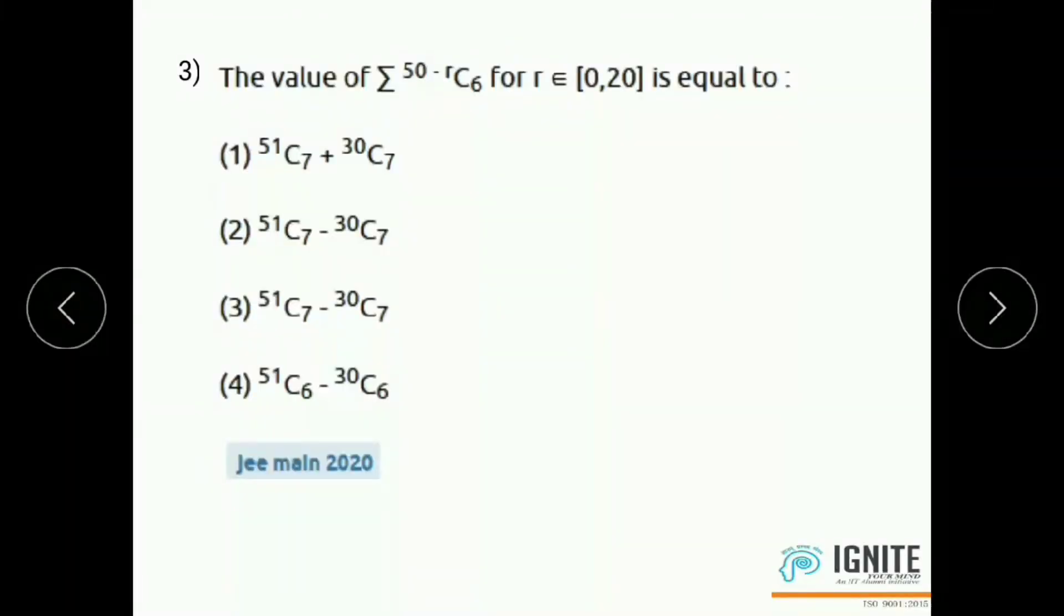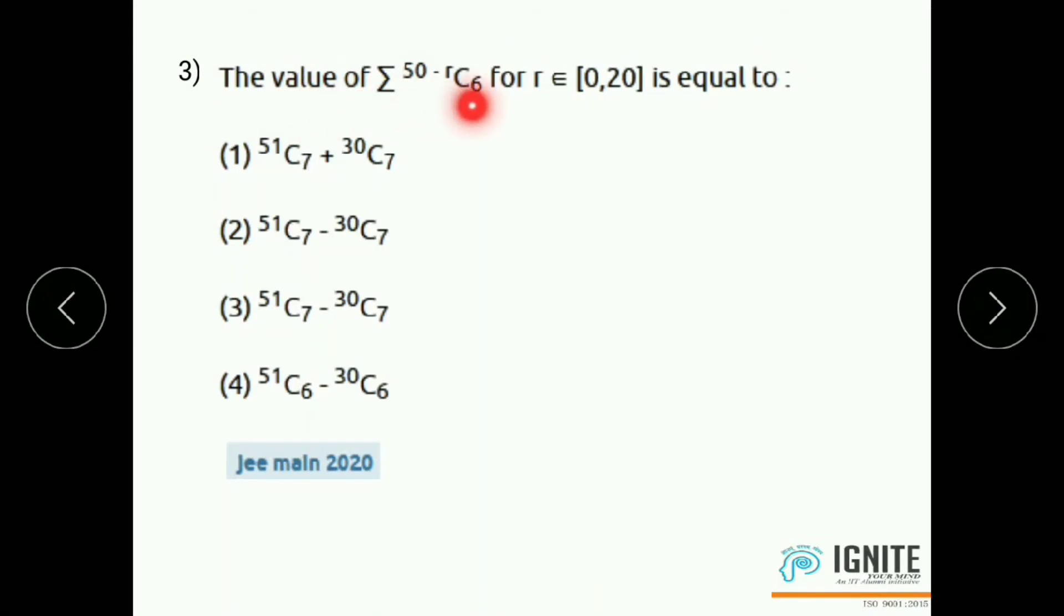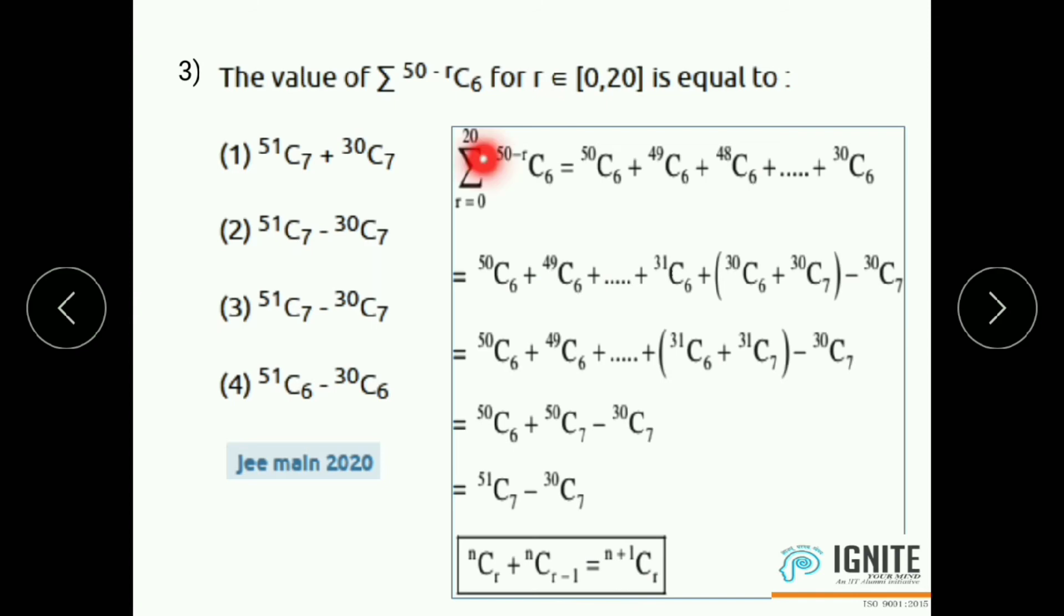Next, third question, the value of sigma 50 minus r C6 for r belongs to 0 to 20 is equal to. Write this expression by expanding. That means sigma r equals 0 to 20, 50 minus r C6 equals 50C6 plus 49C6 plus etc, 30C6.